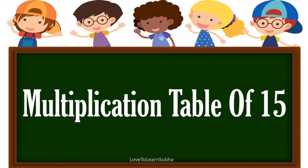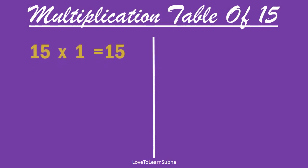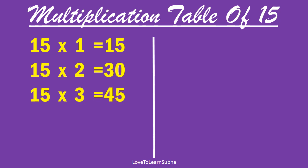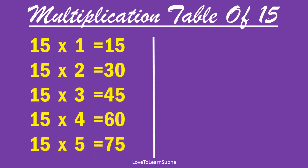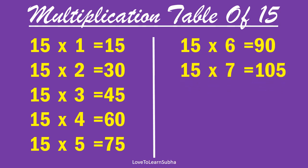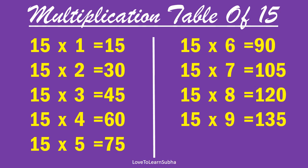Multiplication table of 15. 15×1 is 15, 15×2 is 30, 15×3 is 45, 15×4 is 60, 15×5 is 75, 15×6 is 90, 15×7 is 105, 15×8 is 120, 15×9 is 135, 15×10 is 150.